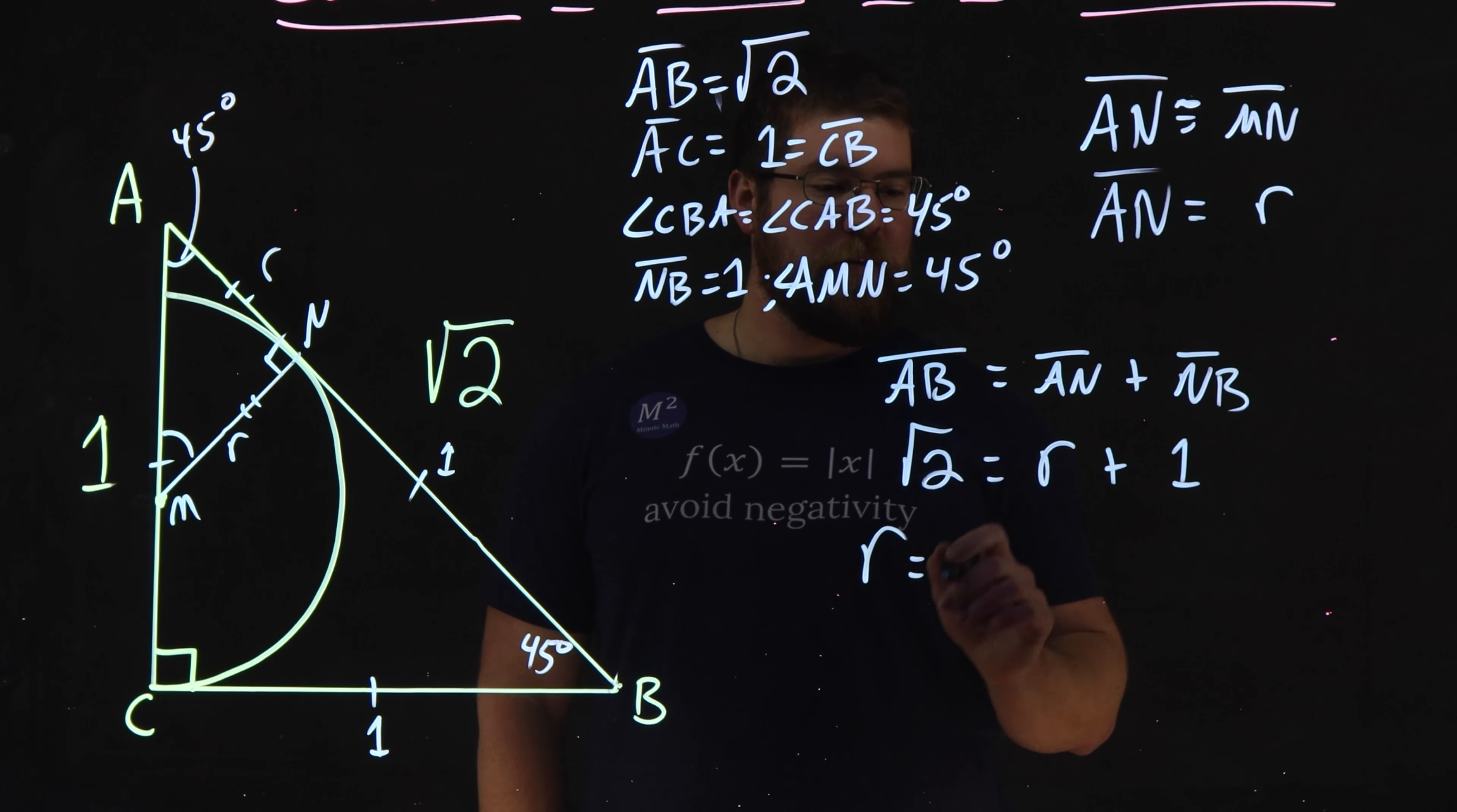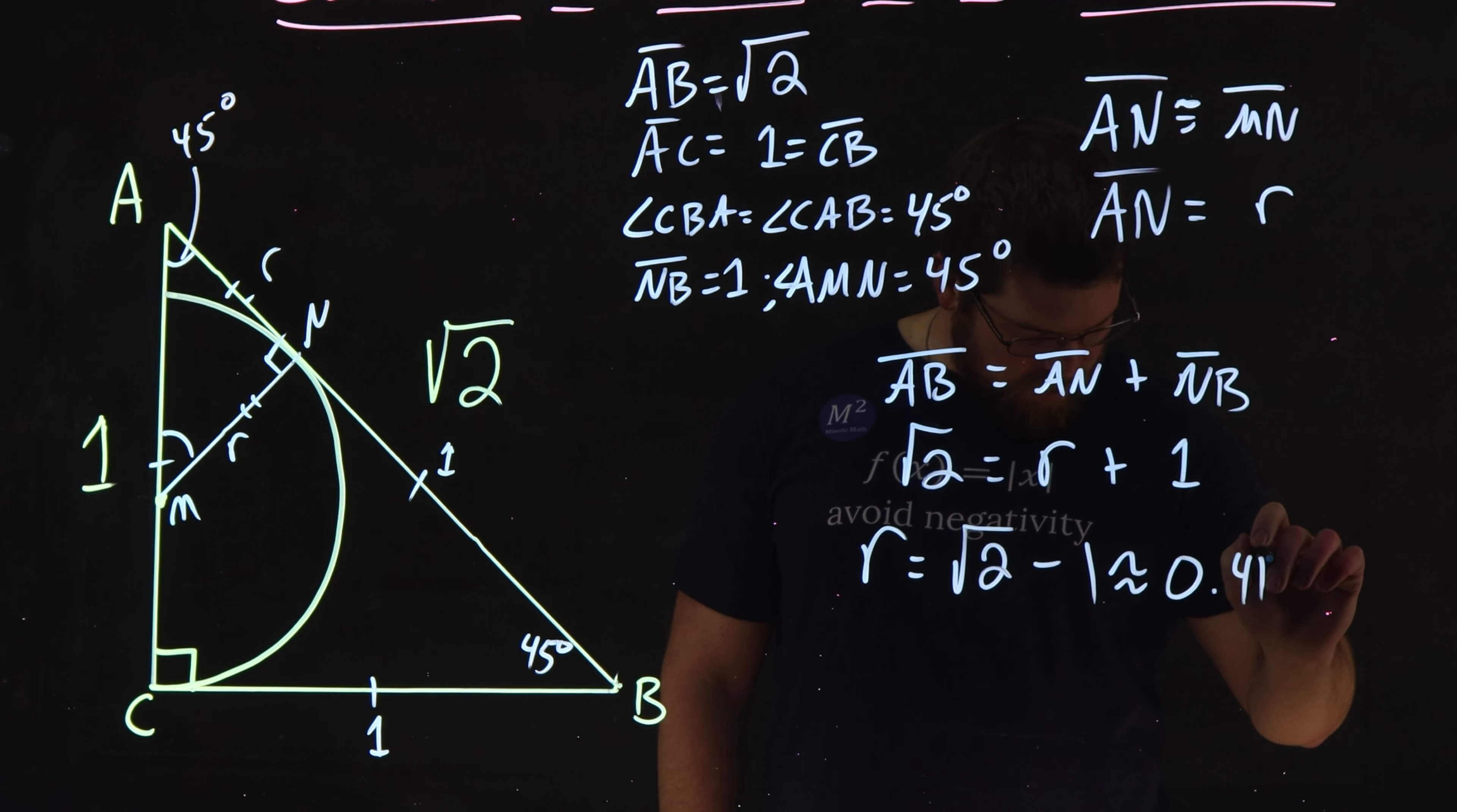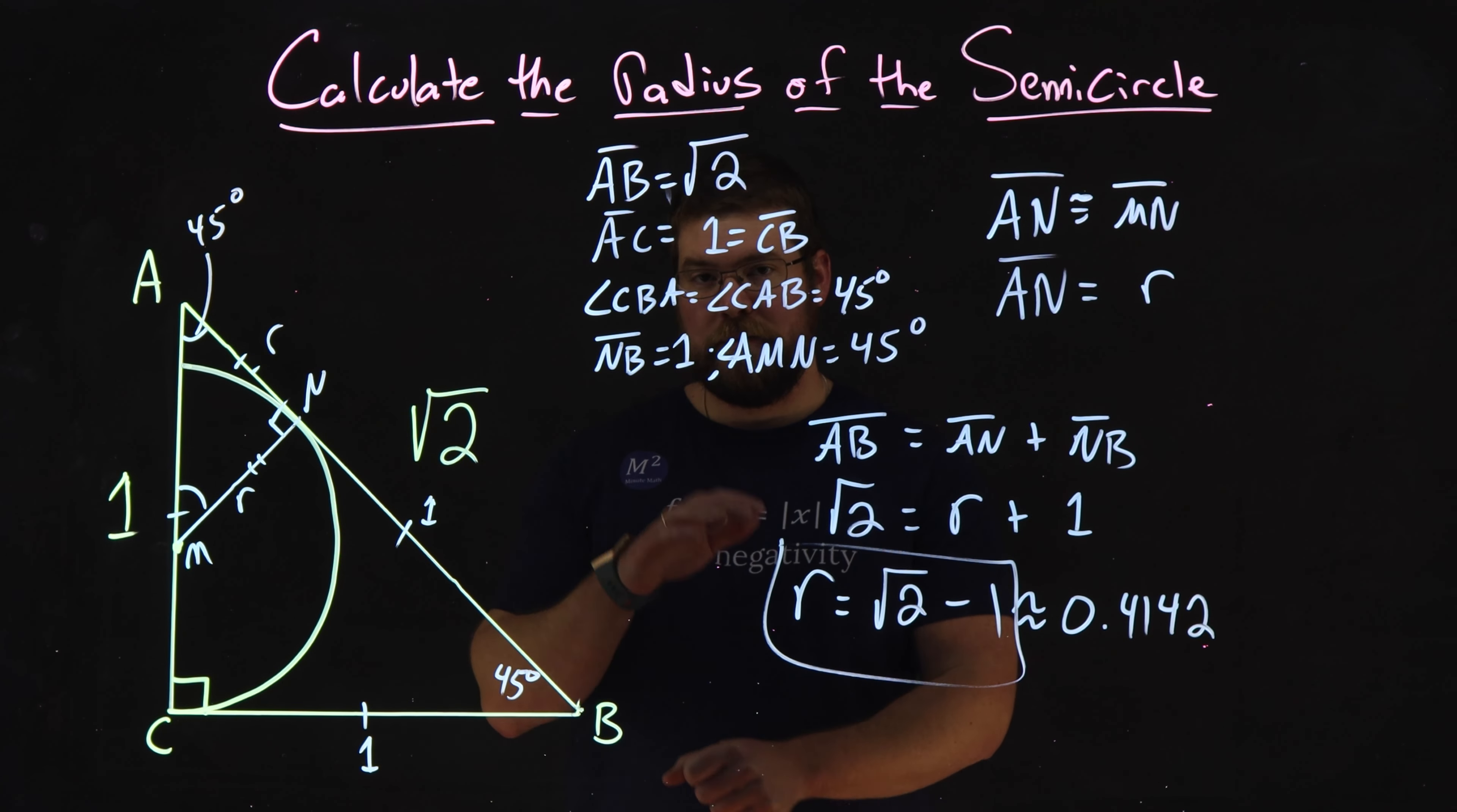R by itself now is equal to the square root of 2 minus 1, subtracting 1 from both sides, or approximately 0.4142. But I like to keep it more exact. And there we have it. We have the radius of our semicircle came out to be equal to the square root of 2 minus 1.